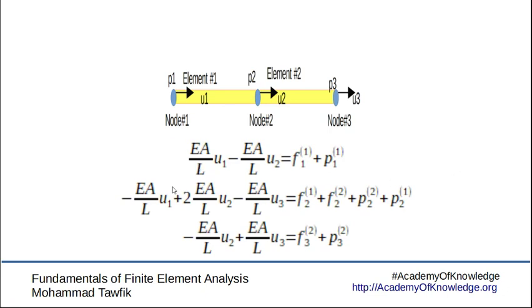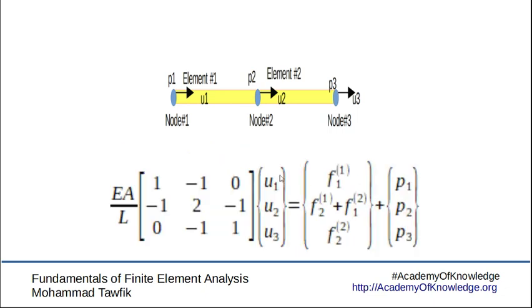So we reduce the number of equations that we have from 4 to 3. Also you can see here that the part containing u2 got added from both elements to obtain a set of equations that can be presented in matrix form like this.